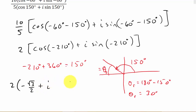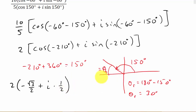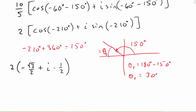Plus i times the sine of negative 210, which is the same as sine of 150. The sine of 30 degrees is 1 half. 150 is in the second quadrant, and sine is positive in the second quadrant, so it's positive 1 half. Then I need to distribute the 2: that gives me negative square root of 3 plus, and 2 times 1 half is 1, so that's i.